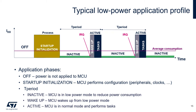After waking up, the MCU performs some tasks. For example, it reads and processes data from a sensor. In consequence, this phase is an active phase. Once the activity is finished, the MCU comes back to low power mode and the whole process repeats again. In each of these application phases, the MCU consumes current.